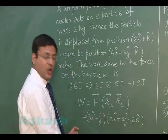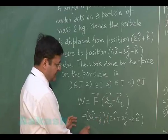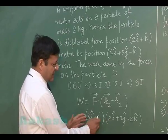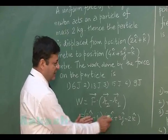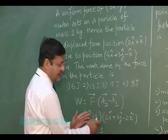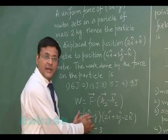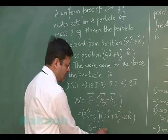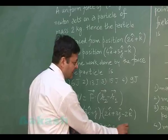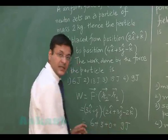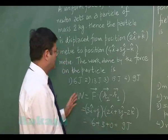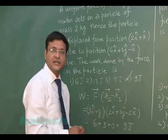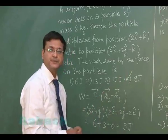Taking the dot product of these two quantities: 3 × 2 = 6, 1 × 3 = 3, and there is no k component in the force so that contributes 0. The answer is therefore 6 + 3 = 9 joule. The correct option is the fourth one, 9 joule.